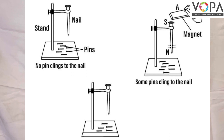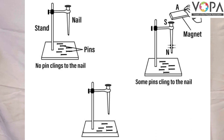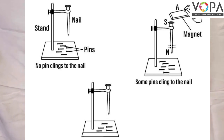After some time, take the magnet away. What happens now? Iron filings stick to the iron bar when the magnet is near it, and fall away as the magnet is taken away.